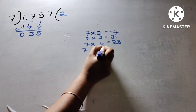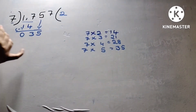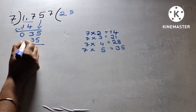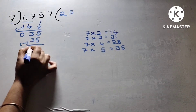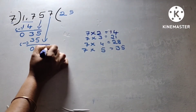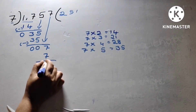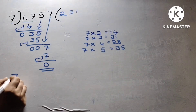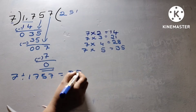7 into 5 is 35. 7 times 5 is 35. So the remainder is 0. Next number is 7. 7 divided by 7 is 0. So 1,757 divided by 7 equals 251.